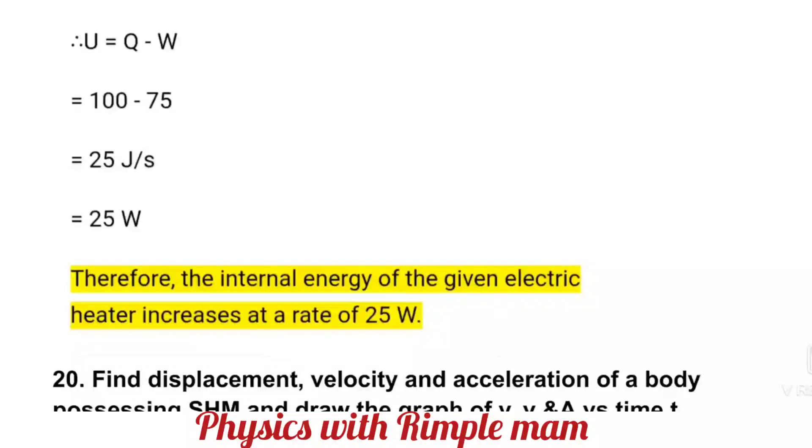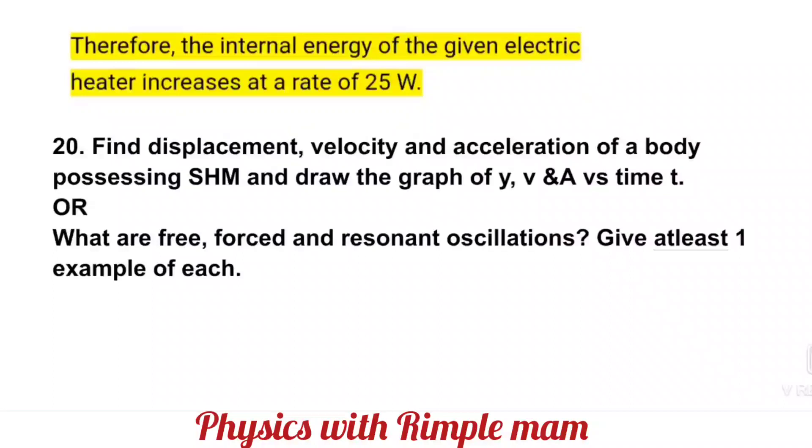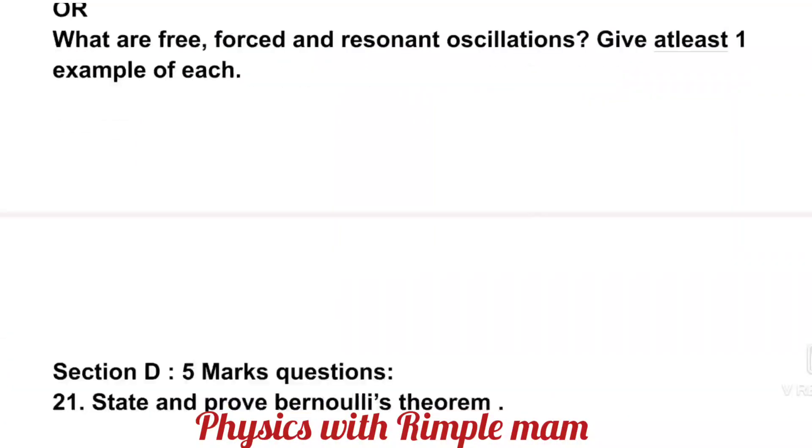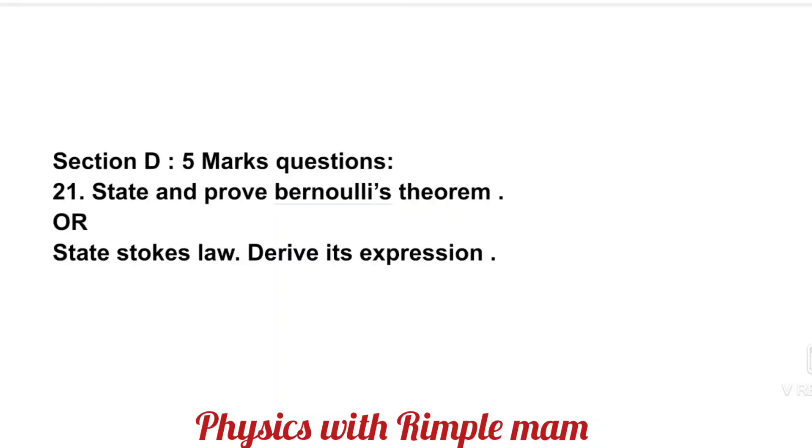Next: Work done during adiabatic process. We've already discussed the complete article. If you want to see the proper lecture, go to unit number 7 and 8 where you'll find the complete explanation. Next numerical: An electric heater supplies heat to the system at a rate of 100 watts. If the system performs work at a rate of 75 joules per second, at what rate is the internal energy increasing? You must do one or two more numericals like this from your book because similar numericals are appearing in sample papers.